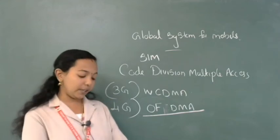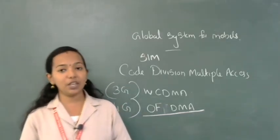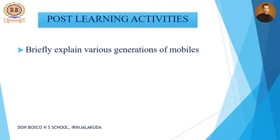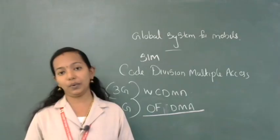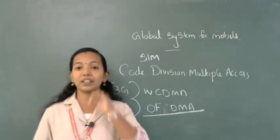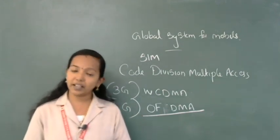To revise: we started with mobile computing — using mobiles for accessing the internet — then discussed different generations: first, second, third, and fourth, along with the services used in each generation. For homework, write a question in your notebook: 'Briefly explain the various generations of mobile computing' — it is an important question. The remaining sections covering mobile services will be discussed in the next video. Thank you.